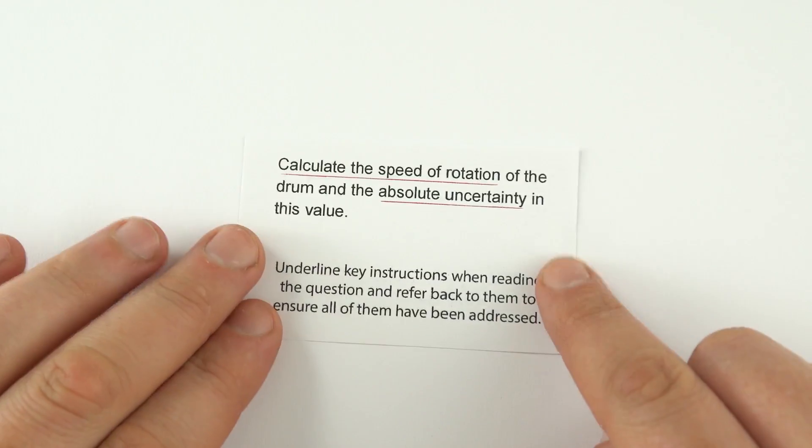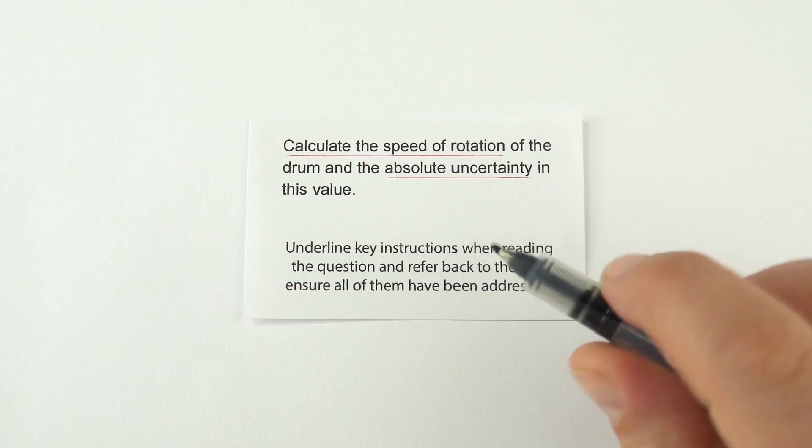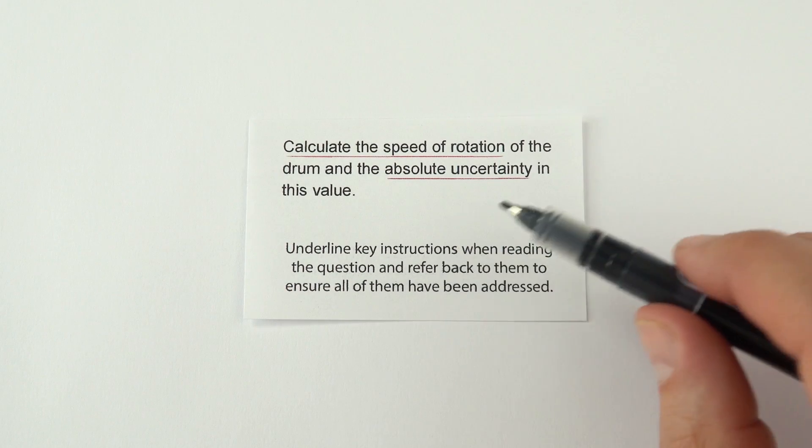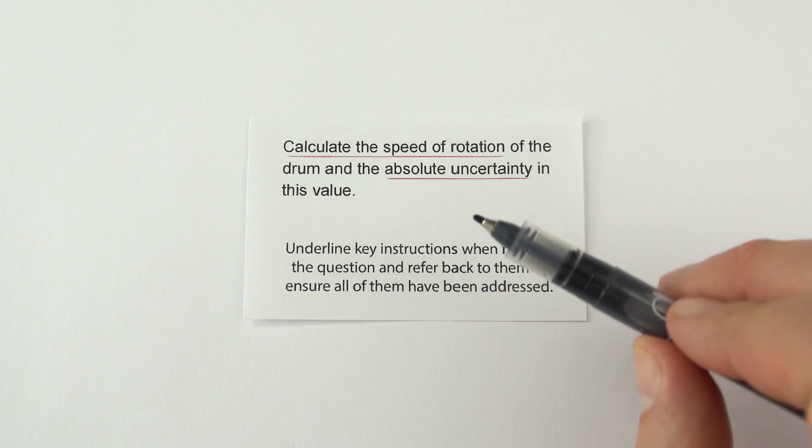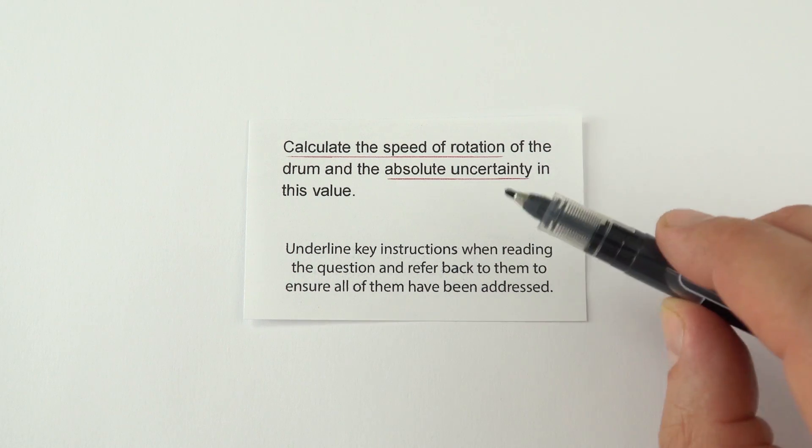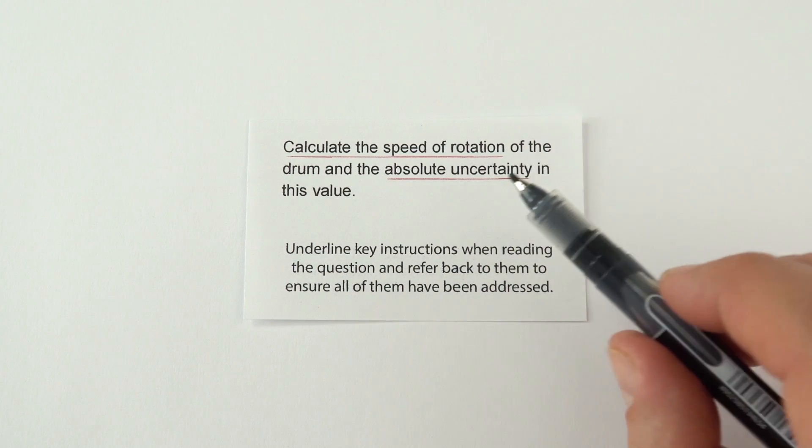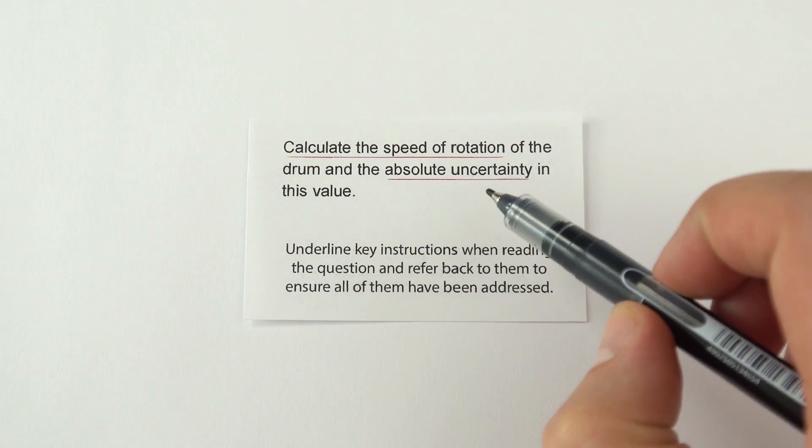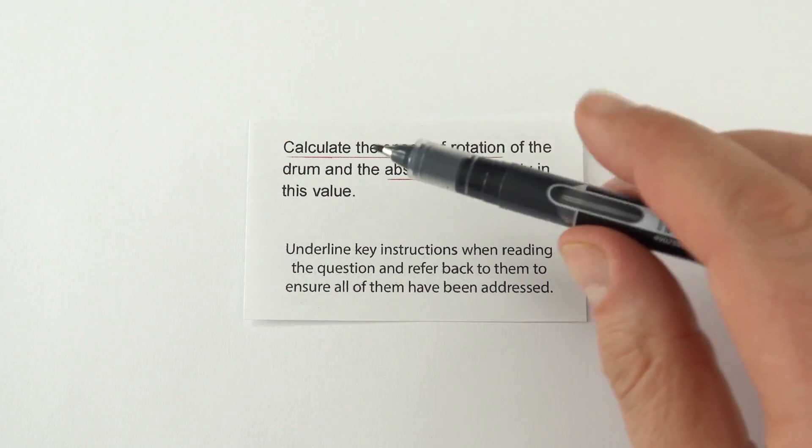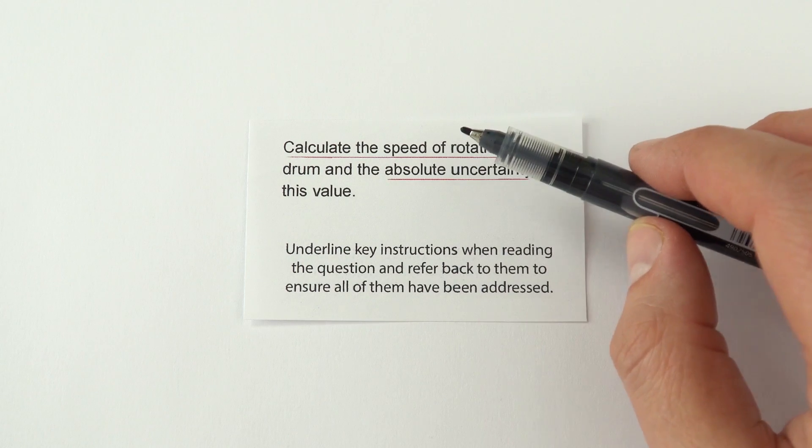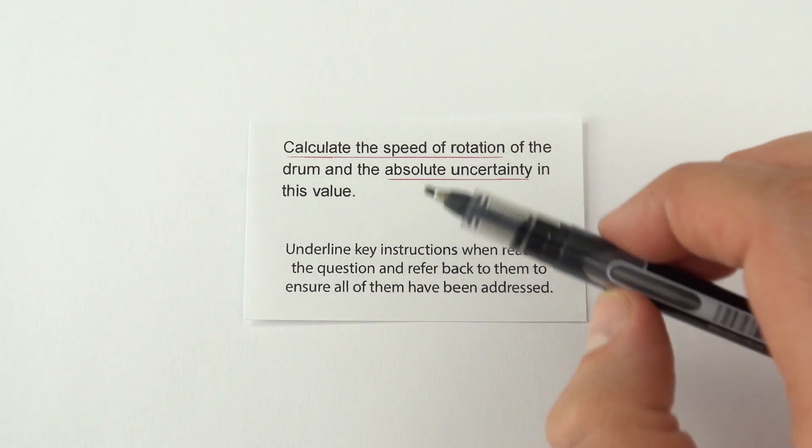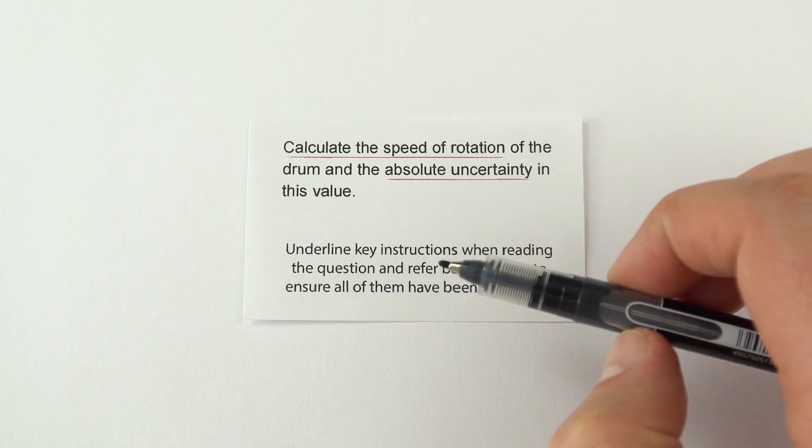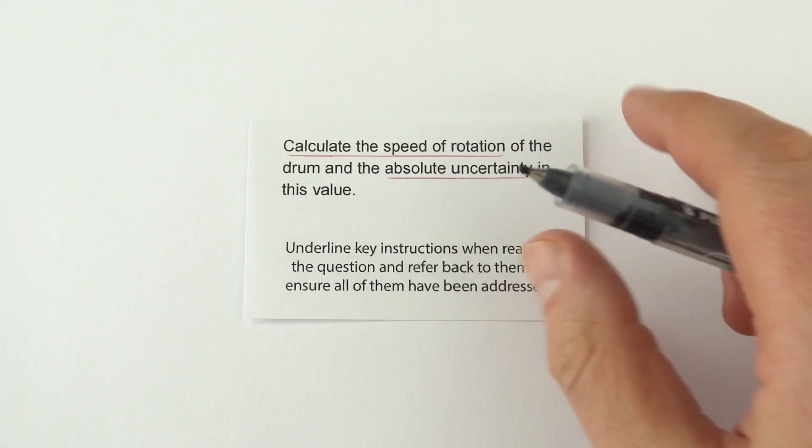This one here, straightforward tip, but underline key instructions when reading the question, and make sure that as you go through your answer, you refer back to the things that you've underlined. You're not going to lose any marks for annotating stuff, for circling the key information, for underlining it, maybe even using a highlighter. But if that allows you to then write down a really good answer that you get full marks for, then that's obviously an absolutely great thing.